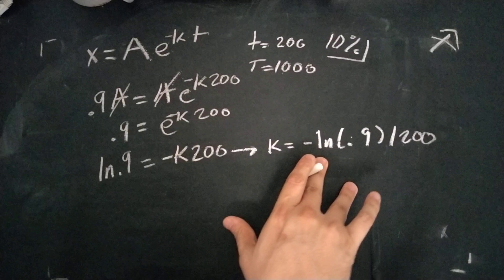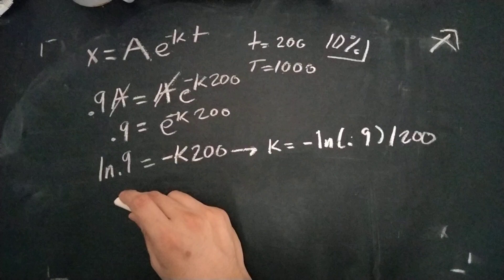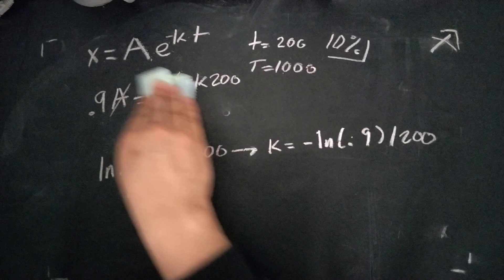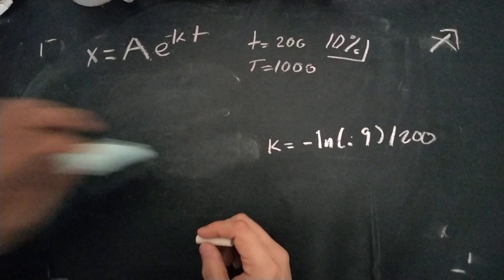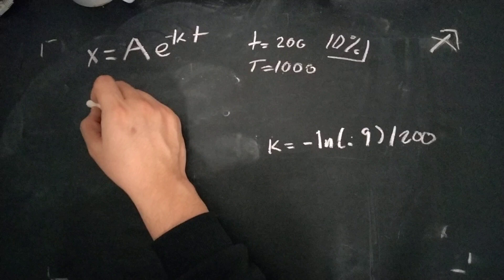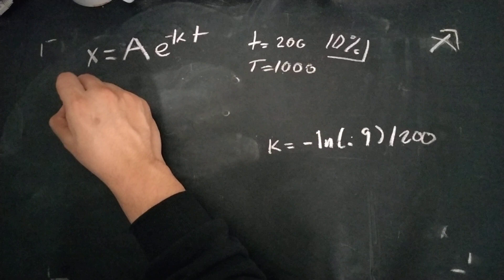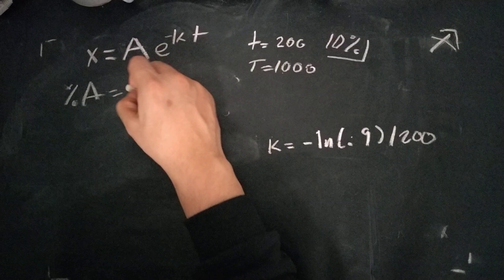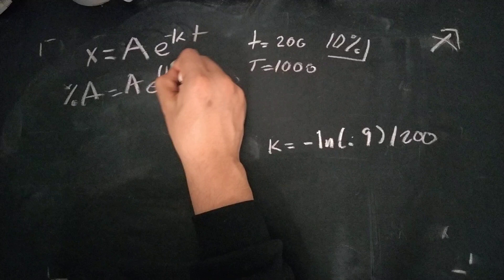And then from here, now that we have K, we can substitute it into this T is equal to 1000. So if you don't mind, we can erase some of this. We have our K. We're now solving. We're now also trying to figure out what percentage is left, so we can write it again. As some percentage of A is equal to A, E, negative, negative.